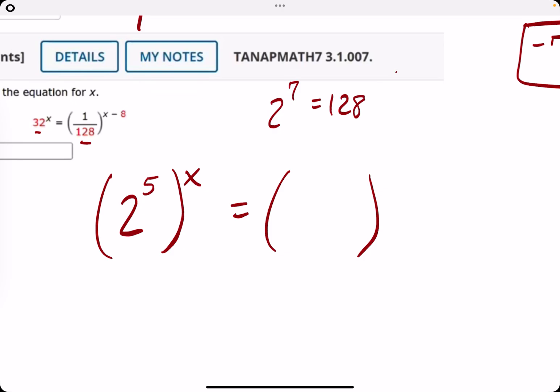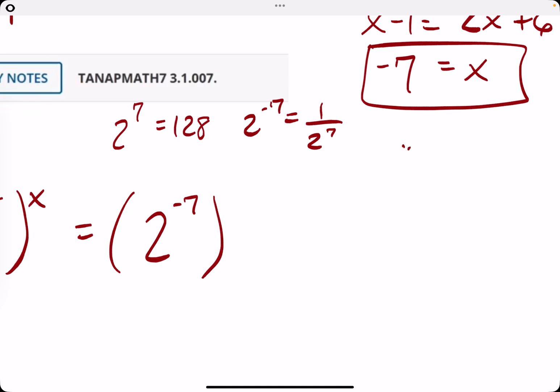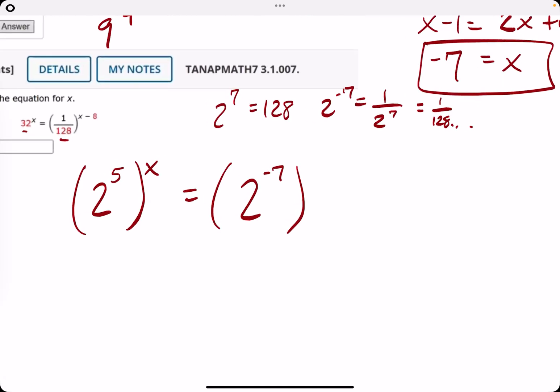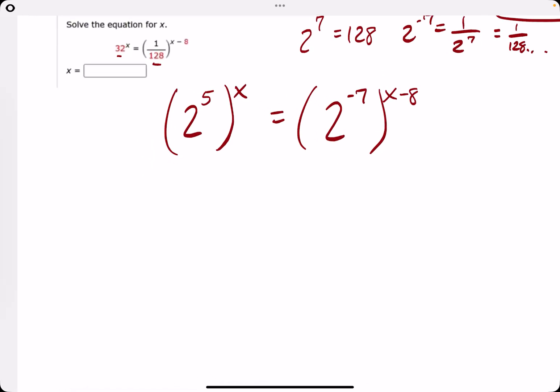Now here's the fun one, 2 to the 7th is 128. Let me make sure that's right. Yeah, okay. So 2 to the 7th is 128, so 2 to the negative 7 is 1 over 128. So we rewrite the 1 over 128 as 2 to the negative 7, leave the x minus 8 up there.